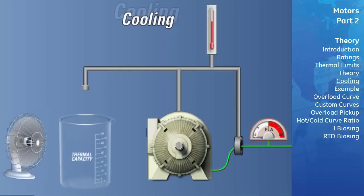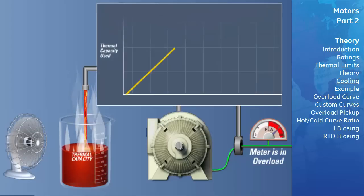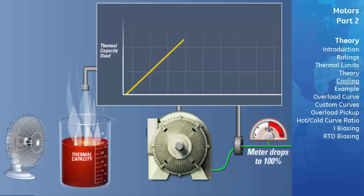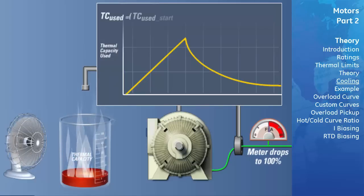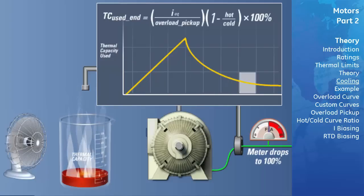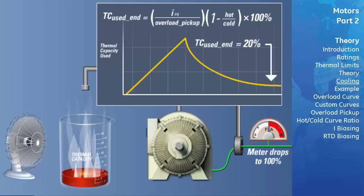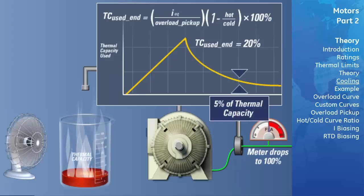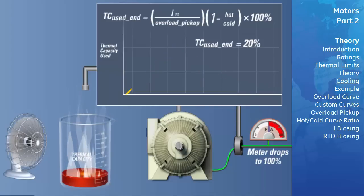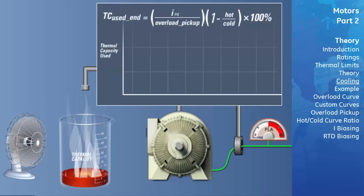In the first situation, the motor had been in an overload condition but is now drawing only 100% rated current, which is below the pickup level, and has a hot-to-cold ratio of 0.8. Using the formula, we can see that at the end of five cooling time constants, the motor will have stabilized at a temperature for which 20% of its thermal capacity is used. The motor came within 5% of its running thermal capacity used after three time constants.